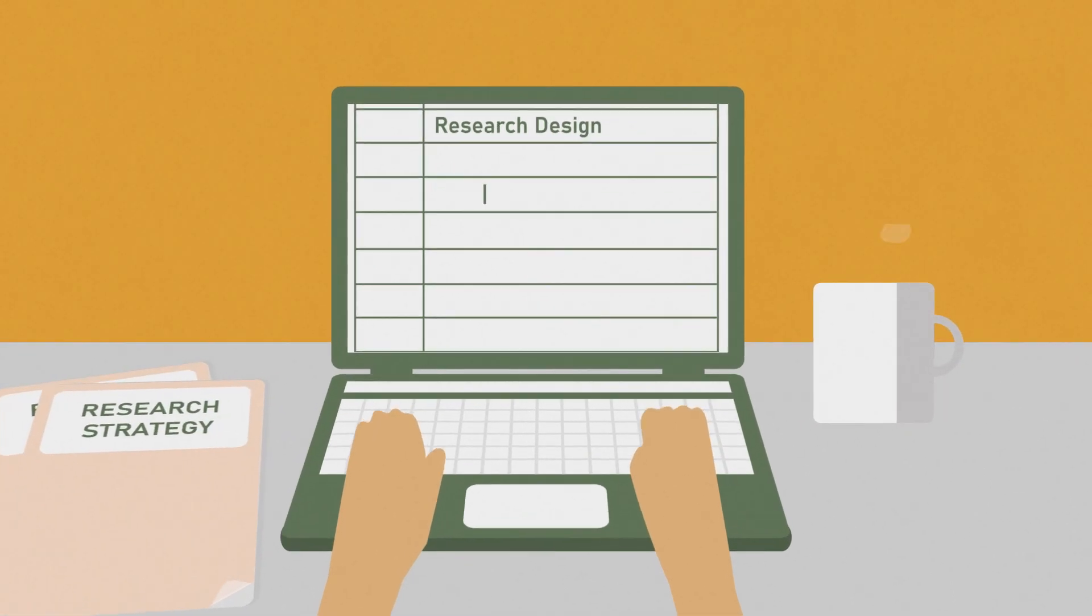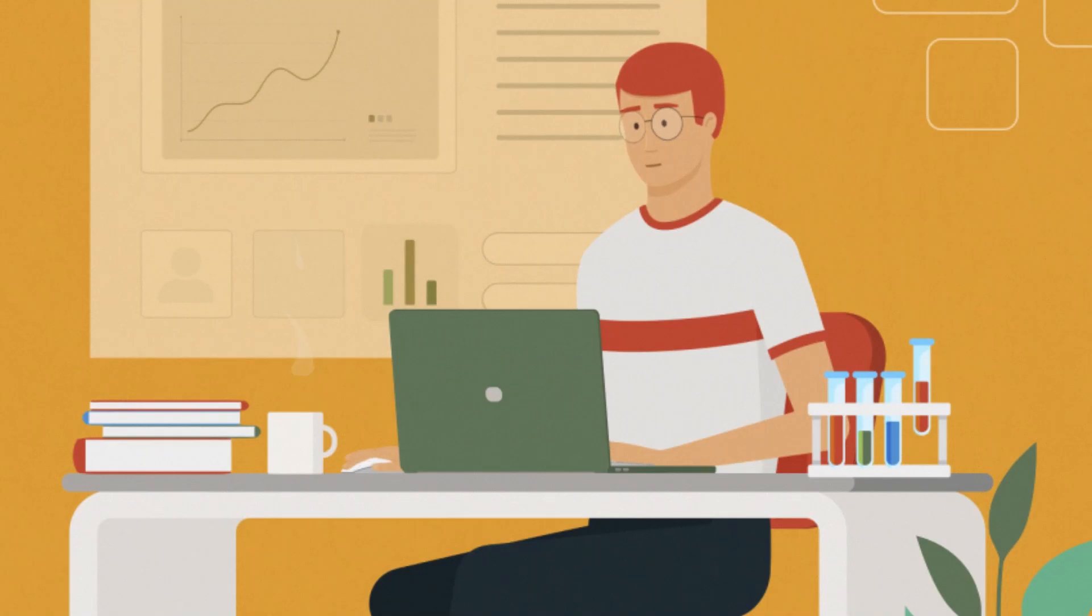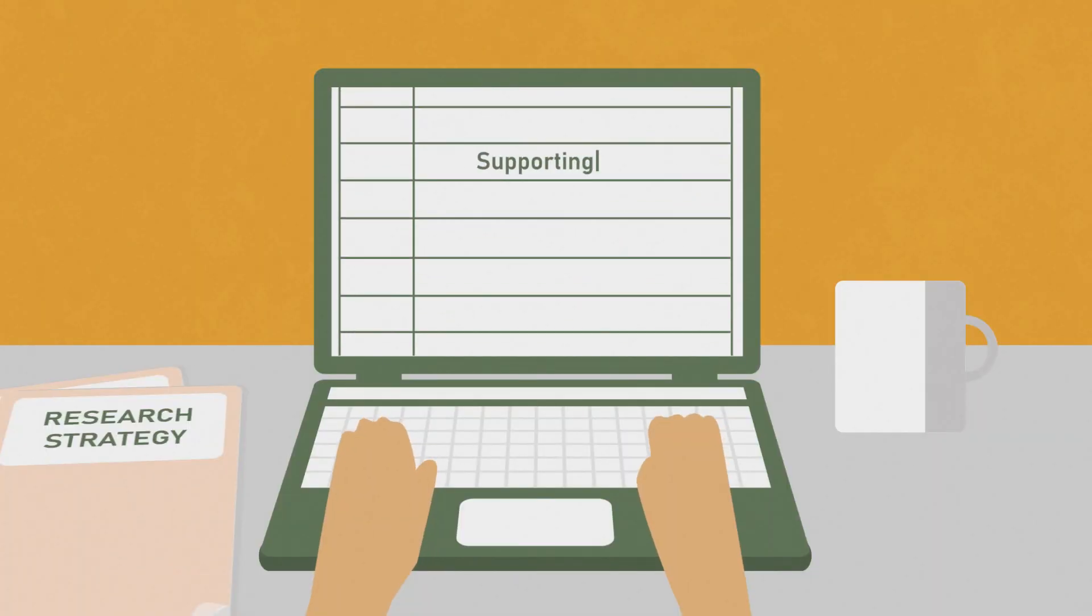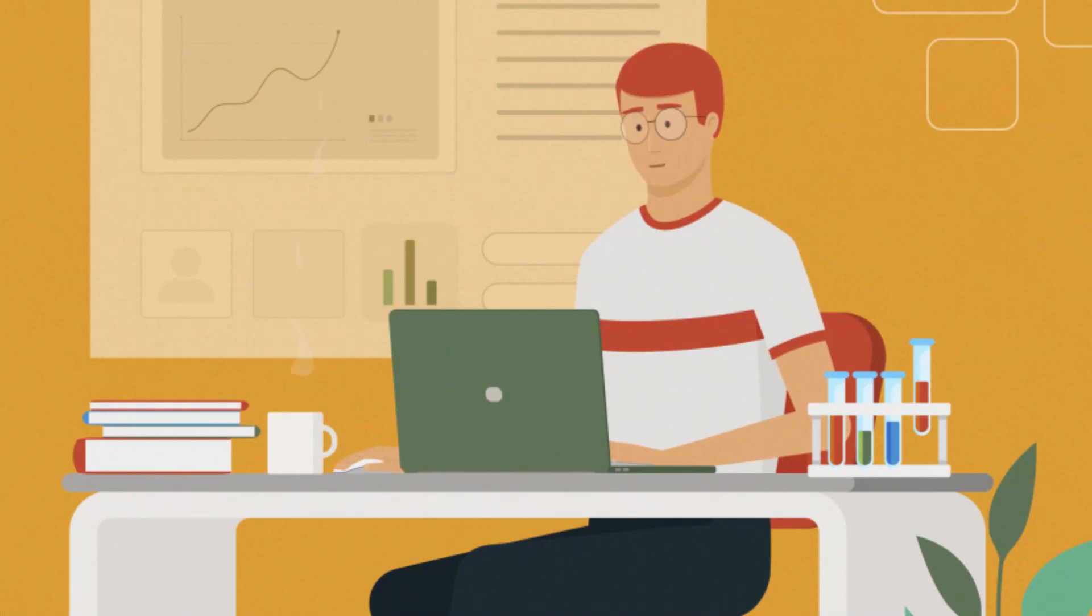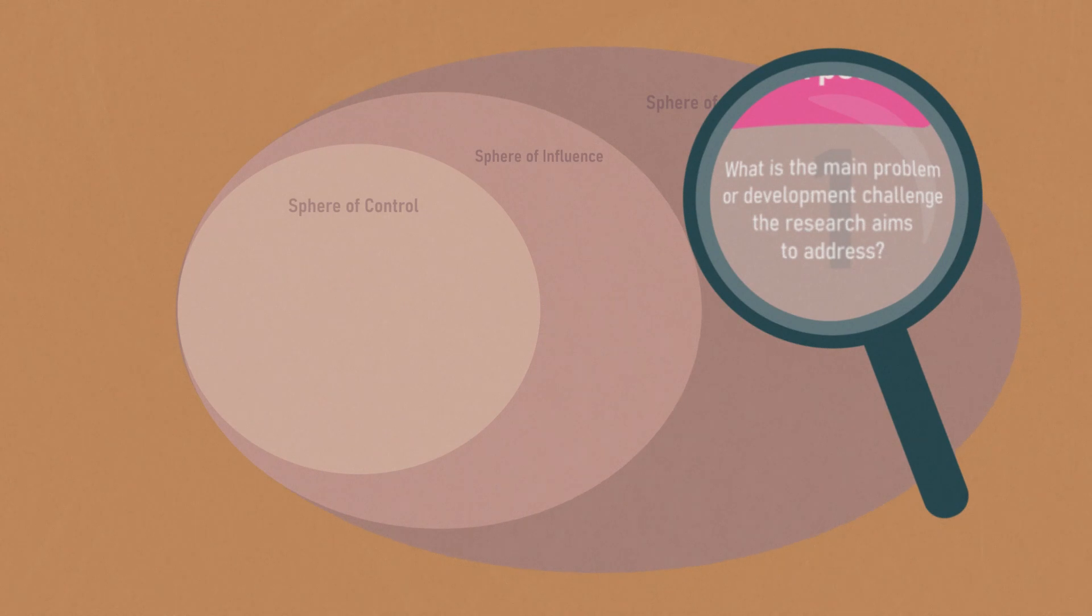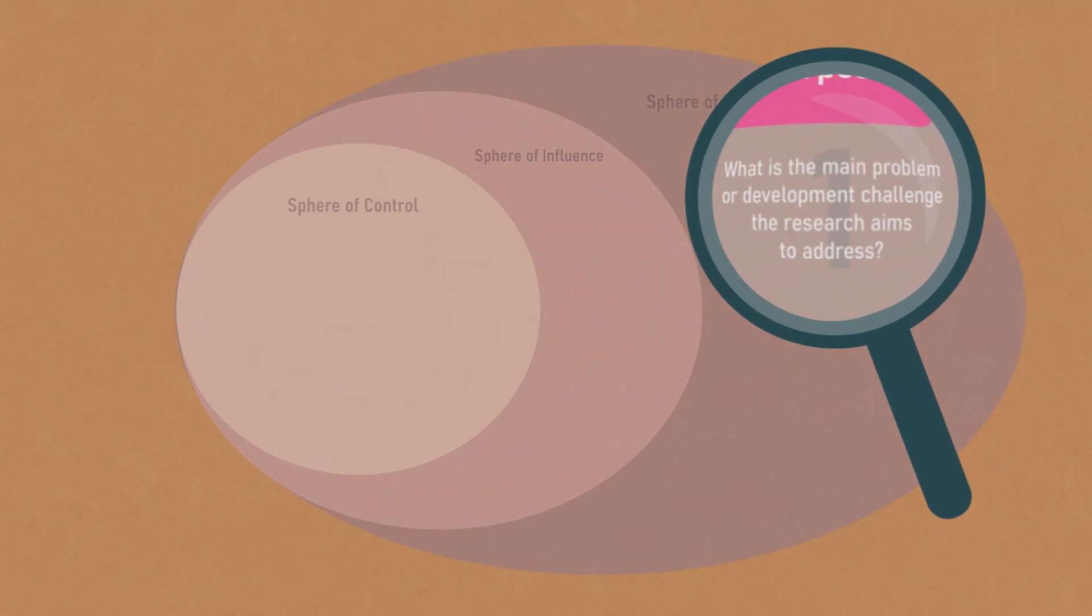Theory of Change processes help plan research with outcomes in mind, guiding strategic thinking about what research is needed and what other supporting activities can help to realize positive change. The process to develop a Theory of Change asks what's the main problem or development challenge the research aims to address.